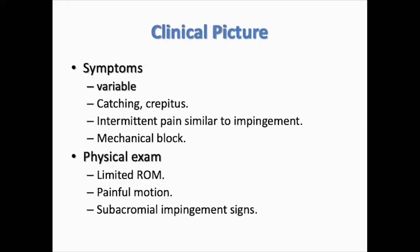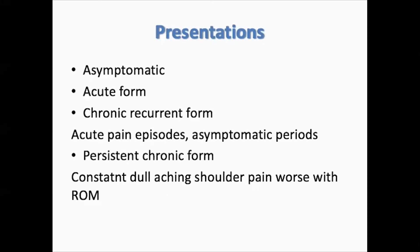Symptoms can vary between catching, crepitus, intermittent pain similar to impingement, and mechanical block. Examination usually reveals limited painful range of motion and positive impingement signs. The condition has several presentations: it could be asymptomatic in 60% of cases, or the patient can present with acute pain, chronic recurrent pain, or chronic persistent constant dull aching pain.